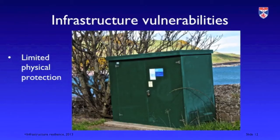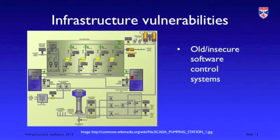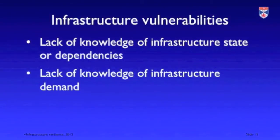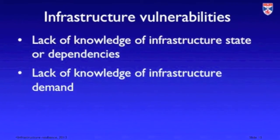We also need to know about the vulnerabilities in our infrastructure when thinking about resilience. Examples include insecure systems, poor physical protection so they can be damaged by weather or terrorist attacks, old or insecure software control systems, lack of monitoring so we don't know what's going on, lack of coordination across infrastructure elements, and lack of knowledge of the infrastructure state, dependencies, or the demands that will be made at particular times.